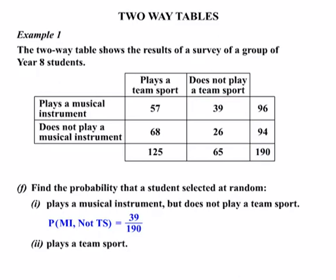In Part 2, we find the probability that a student plays a team sport. We find the number of students who play a team sport from that whole column — the total is 125 students — out of our 190 students. Written as a fraction that's 125 over 190, which simplifies to give us a probability of 25 over 38.